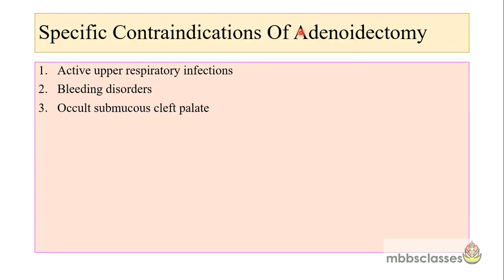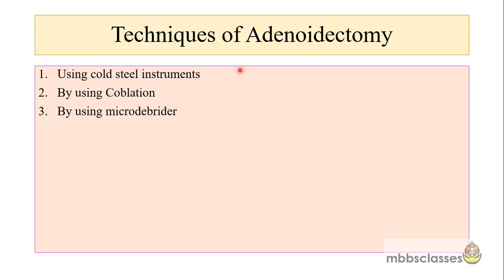Contraindications for adenoidectomy include active upper respiratory tract infection, history of bleeding disorders, and occult submucous cleft palate due to the risk of velopharyngeal insufficiency. The surgery is performed under general anesthesia using classical cold steel instruments, or nowadays by coblation and microdebrider, which reduce operative time, reduce bleeding, and allow precise adenoid removal under endoscopic guidance.